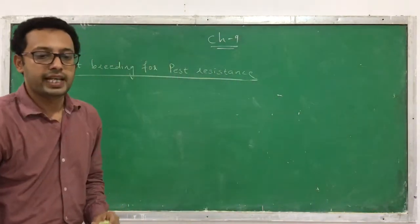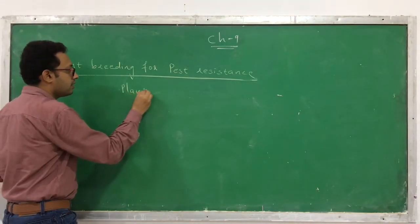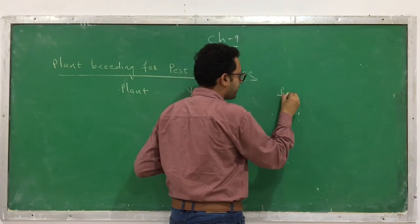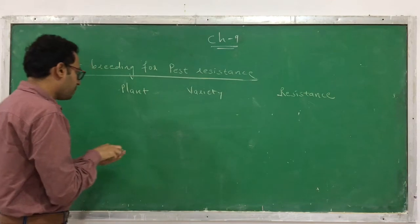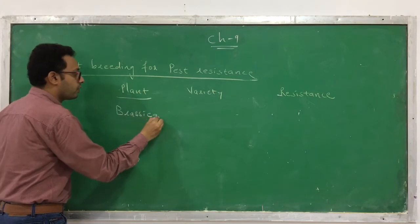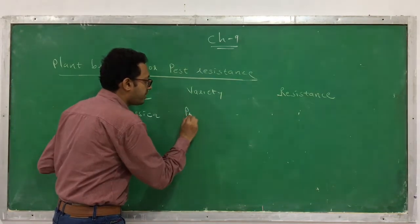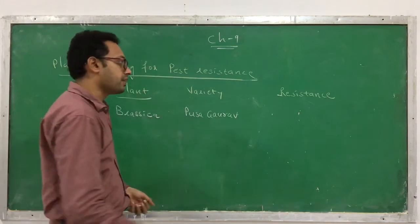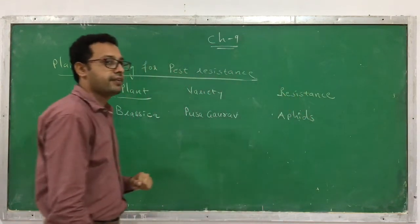Here are some examples of varieties generated through plant breeding that are resistant against pests. The first example is Brassica, which we commonly call rapeseed mustard. The variety generated by plant breeding is Pusa Gaurav, and it is resistant against aphids.